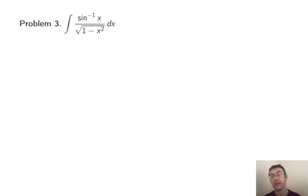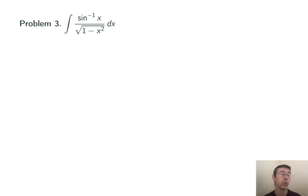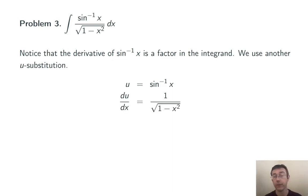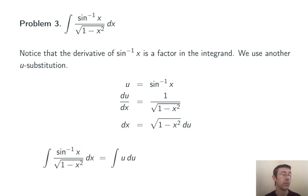Problem three: integral of the inverse sine of x over the square root of 1 minus x squared dx. This is a different sort of u-substitution. This time, I notice that the derivative of that inverse sine is actually a factor in the integrand. So the substitution u equals the inverse sine of x is going to be helpful. Taking the derivative of both sides and solving for dx, dx equals the square root of 1 minus x squared times du. Substituting back in, those factors of the square root of 1 minus x squared cancel.